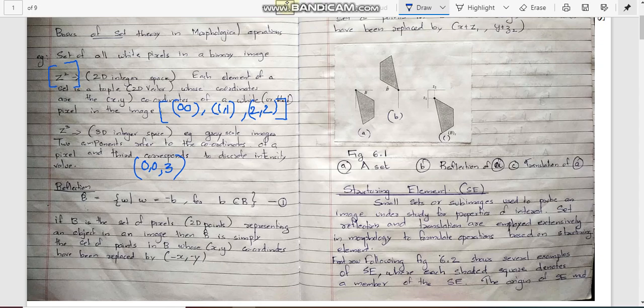Set W such that W equals minus B for small b element of capital B. We have capital B, a set of pixels representing an object. This is our B. B cap means reflection is W equal to minus B. Small b is a single element of capital B. Whatever be the value of B in figure A, in figure B, it is now minus B. That gives the reflection.